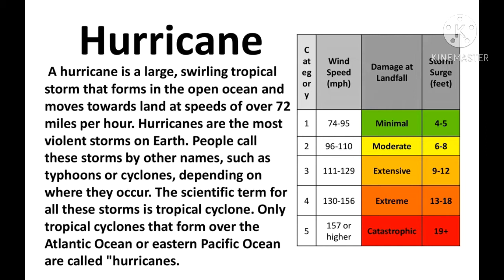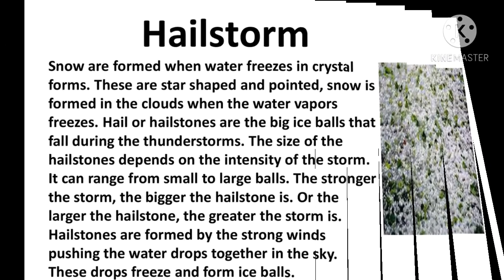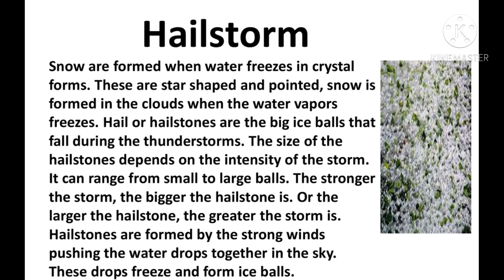The wind speed damage chart shows: 74 to 95 mph causes minimal damage at landfall; 96 to 110 mph causes moderate damage at landfall; 119 to 129 mph causes extensive damage at landfall; 130 to 156 mph causes extreme damage at landfall; and 157 mph or higher is catastrophic.